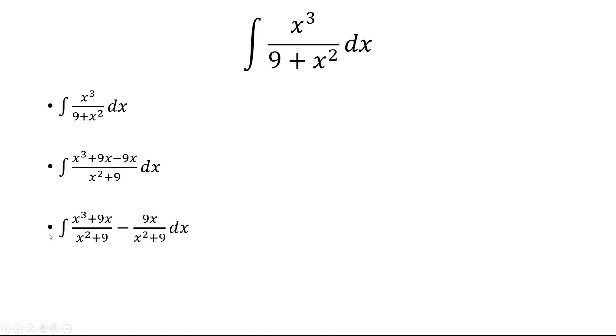Now x cubed plus 9x over x squared plus 9 is just x. And we can separate this into two separate integrals. The antiderivative of x is just x squared over 2. So now we just need to solve for the second integral.